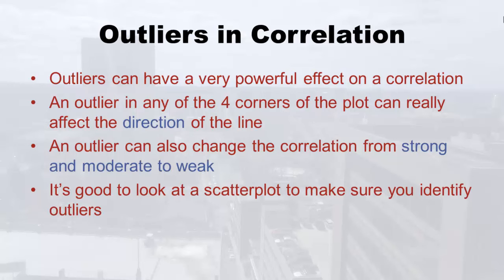That's part of why you make a scattergram first — outliers can have a really powerful effect on the correlation, especially if they're in any of the four corners of the plot. An outlier in the upper right, upper left, lower right, or lower left can really affect the direction, like a seesaw. It can also mess with how strong or weak the correlation is. So you really want to start with a scatterplot.